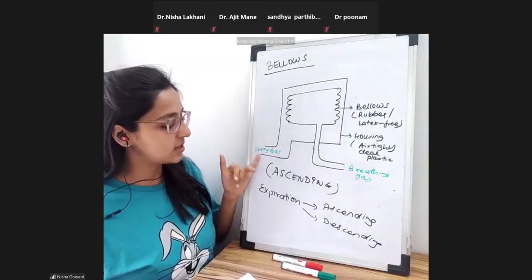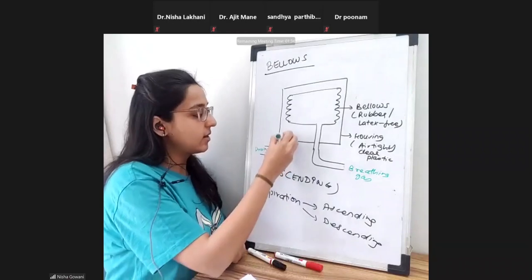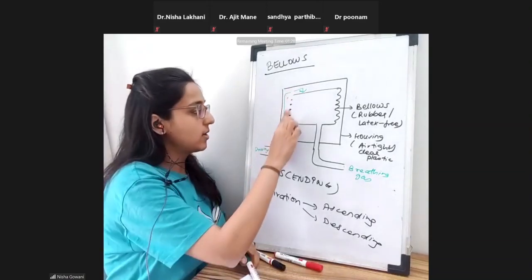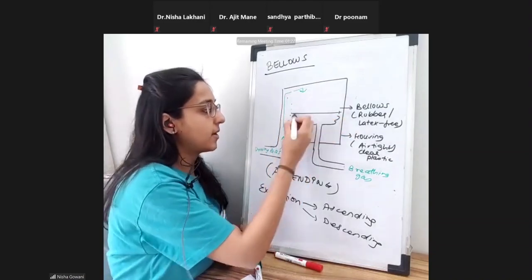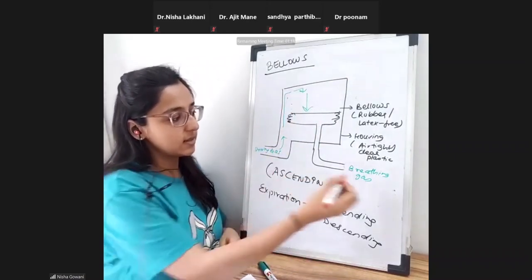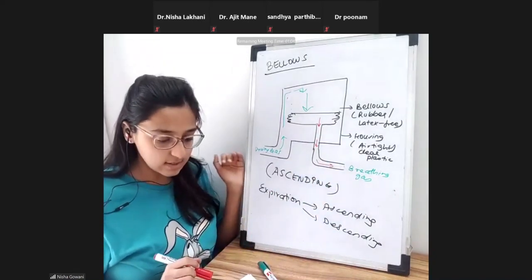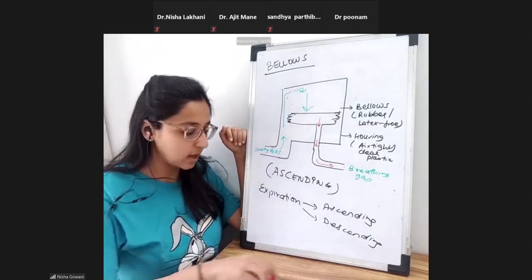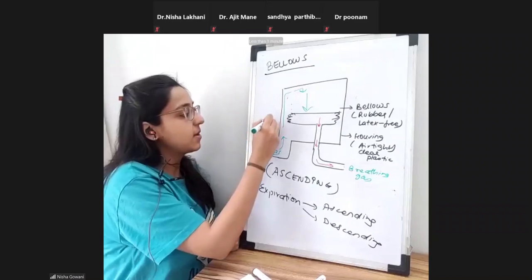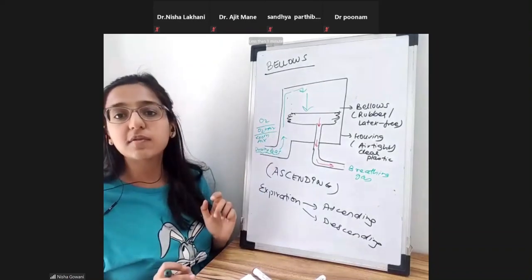What is the driving gas, and what is its role? This gas enters into the bellows housing where the bellows is placed. The job of this driving gas is to compress the bellows. During inspiration, the driving gas presses the bellows, which gets compressed, and the breathing gas inside the bellows — the gas the patient will receive — leaves the bellows and goes towards the patient circuit. The driving gas can be oxygen, oxygen plus air, or room air.